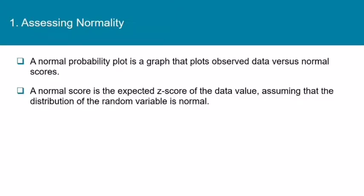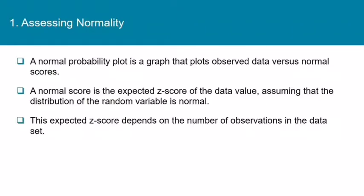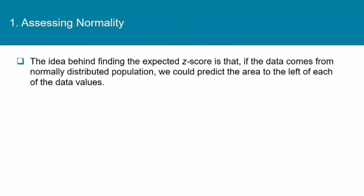The problem is that we cannot calculate a data value's z-score if we don't know the mean and standard deviation of the population that it came from. We're talking about a situation where we don't know much about the population, so we wouldn't have the mu and sigma. This expected z-score depends on the number of observations in the dataset. The idea is that if the data comes from a normally distributed population, we should be able to predict the area to the left of each of the data values.